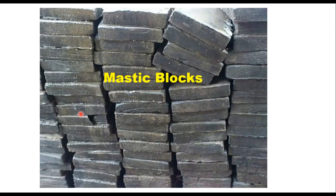If the material is not required for instant use, you can cast blocks of 25 kg. These blocks are without coarse aggregate. The bitumen mastic blocks, when subsequently required at the site, will be transported there, broken into pieces not exceeding 60 mm cube, and then remelted in the cooker at 170 to 200 degrees centigrade.